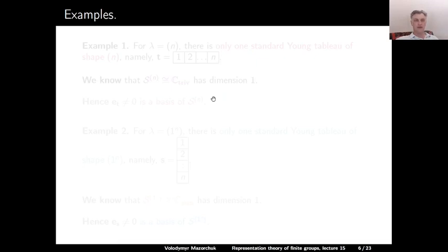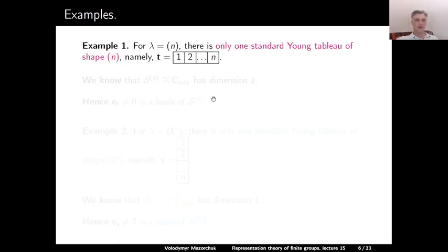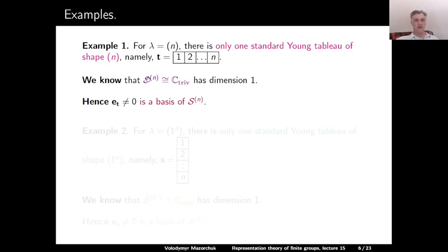Let us illustrate our main theorem by examples. Example 1: consider the partition (n) of n. There is only one standard Young Tableau for this partition — namely the tableau where we write elements 1 to n in the usual order in one row. We know the Specht module is isomorphic to the trivial S_n module, of dimension 1. The polytabloid associated to our unique standard Young Tableau is a non-zero element of both m^n and S^n, so it forms a basis of the Specht module.